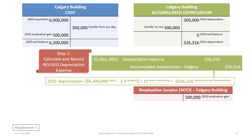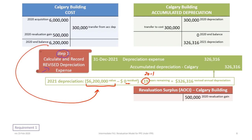Moving to year two, we recalculate revised depreciation. The new cost is $6.2 million, residual is still zero, and there are 19 years remaining (20 minus 1). Revised annual depreciation is $326,316. The journal entry is: debit depreciation expense, credit accumulated depreciation $326,316. At this point, the cost T-account has a balance of $6.2 million, accumulated depreciation is $326,316, and the revaluation surplus remains at $500,000.